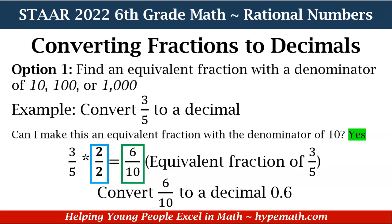Let's look at an example. We are going to convert 3 fifths to a decimal. The first question I'm going to ask myself, if I'm going to use option one, is: can I make this an equivalent fraction with a denominator of 10? The answer is yes, because if I multiply 5 by 2, that will be 10. So here we have 3 fifths times 2 over 2. Remember, whatever you do to the bottom, you have to do to the top. So we have 3 times 2 is equal to 6 and 5 times 2 is equal to 10. So 6 tenths is equivalent to 3 fifths.